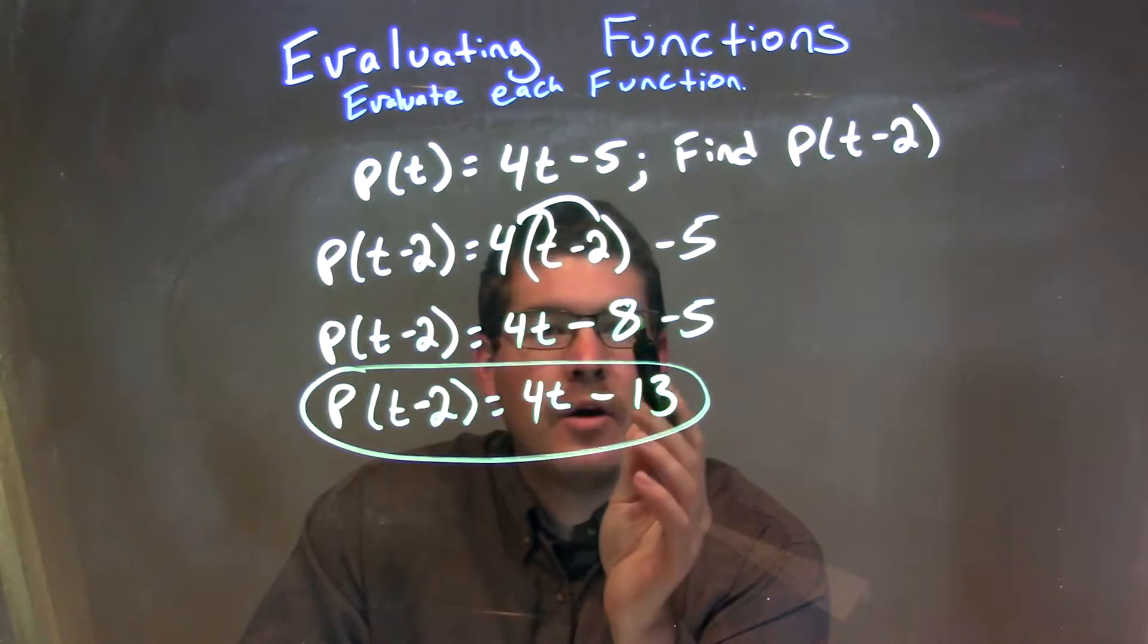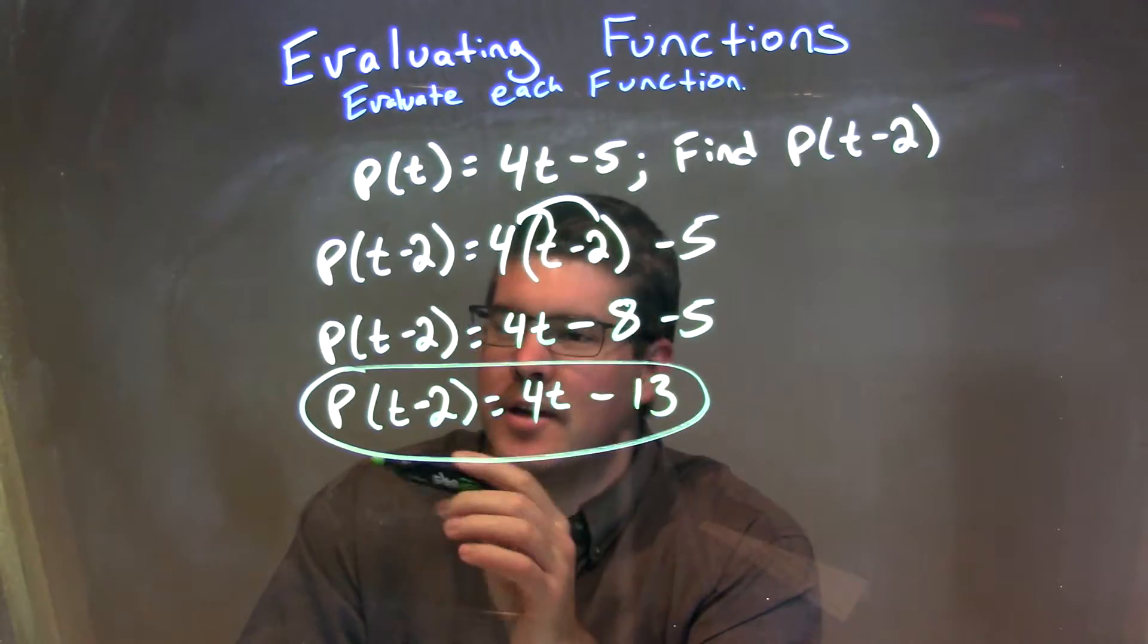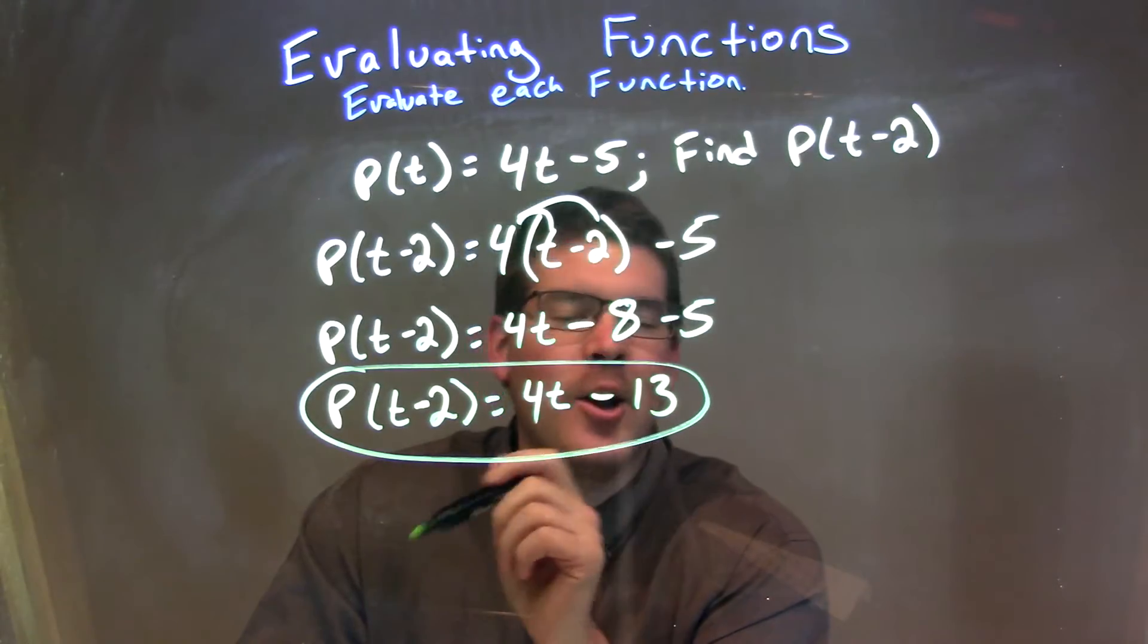There's another big amount of 4t. So minus 8 minus 5 is a minus 13. So our final answer here is P of t minus 2 is equal to 4t minus 13.